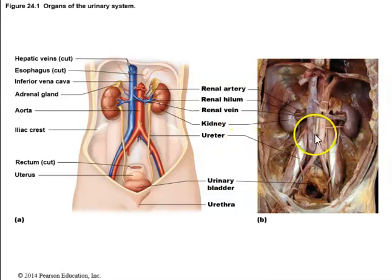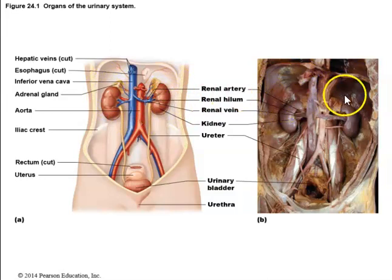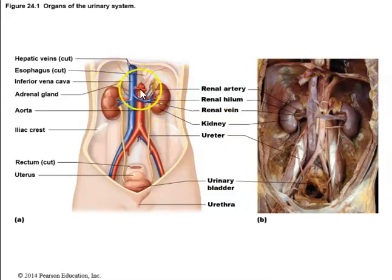The right kidney is normally slightly lower than the left kidney because the right lobe of the liver is larger than the left lobe. Sitting on top of the kidneys are two very important glands — the adrenal glands.